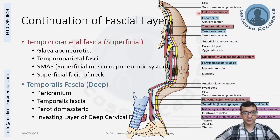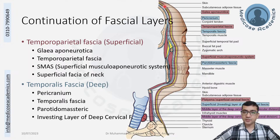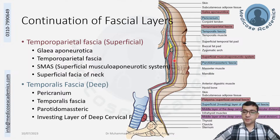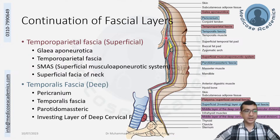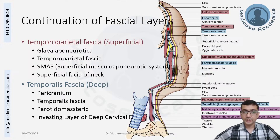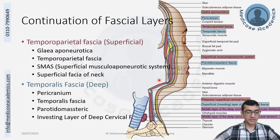As a quick revision: the superficial temporal parietal fascia is a continuation of the galea aponeurotica, the conjoint tendon, temporal parietal fascia, the superficial musculo-aponeurotic system, and the superficial fascia of the neck containing platysma. The deep temporal fascia, from above downward, consists of pericranium, conjoint tendon, temporalis fascia, the two layers covering the parotid gland, and the investing layer of deep cervical fascia.